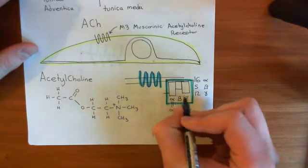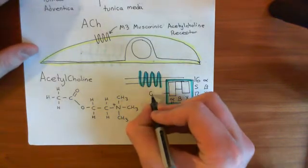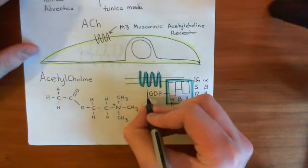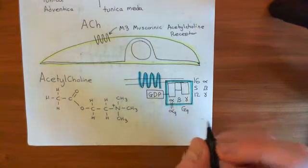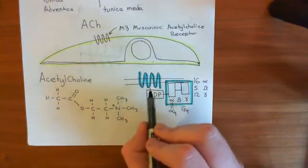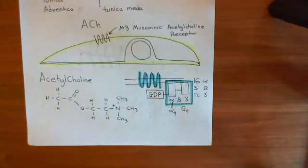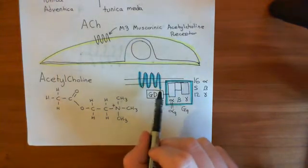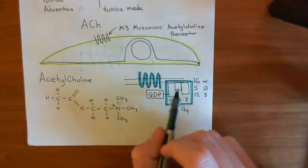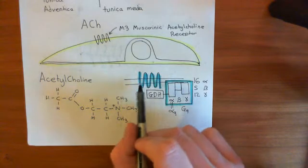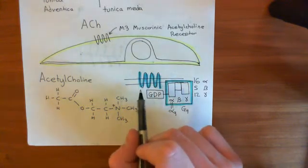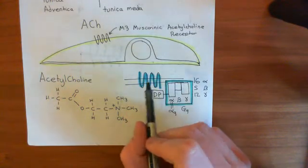This heterotrimeric G-protein will be off when the alpha subunit is bound to GDP. When GTP is bound to the alpha subunit instead of GDP, that is the on state. The inactive M3 receptor and the inactive heterotrimeric G-protein are said to be coupled — in some cases physically linked, in others the G-protein is bound to the inner leaflet of the phospholipid bilayer and readily accessible to the 7-transmembrane receptor. Either way, the heterotrimeric G-protein is nearby the receptor.